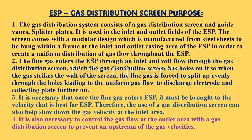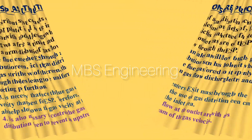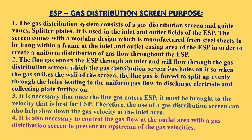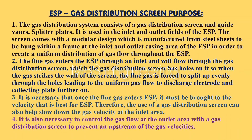Point 3: it is necessary that once the flue gas enters the ESP, it must be brought to the velocity that is best for the ESP. Therefore, the gas distribution screen can also help slow down the gas velocity at the inlet area. Point 4: it is also necessary to control the gas flow at the outlet area with a gas distribution screen to prevent upstream gas velocities.